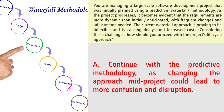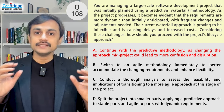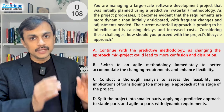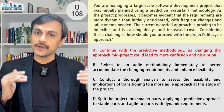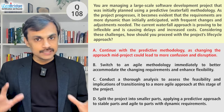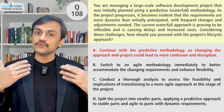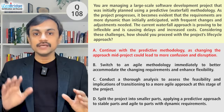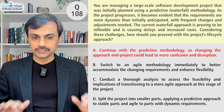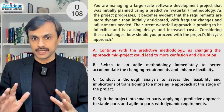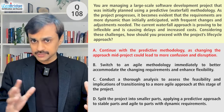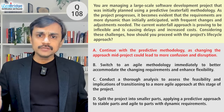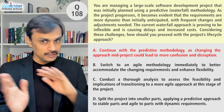Option A: continue with the predictive lifecycle approach, as changing the approach mid-project could lead to more confusion and disruption. The question is clearly indicating there is a problem at hand, and avoiding the problem by continuing with the current approach is not what a proactive project manager should do. We are always here to challenge the status quo, thinking of improving to produce valuable deliverables for stakeholders. Continuously taking corrective and preventive action is the role of a project manager. So option A — continuing as things are — is not a good idea, even if there may be some disruption or stakeholder realignment required.